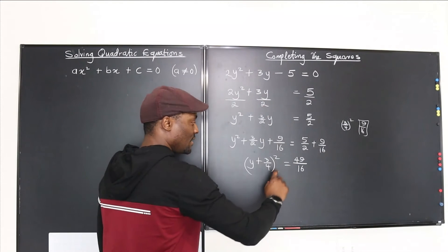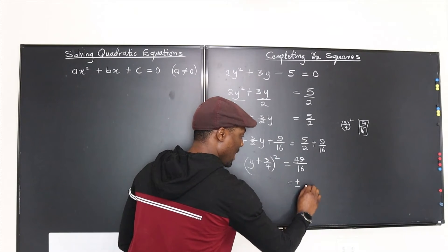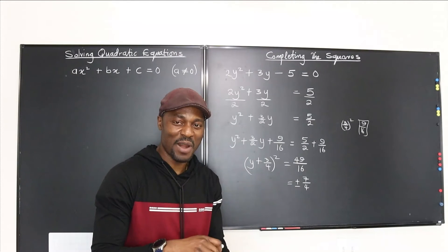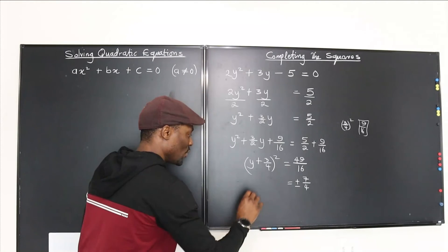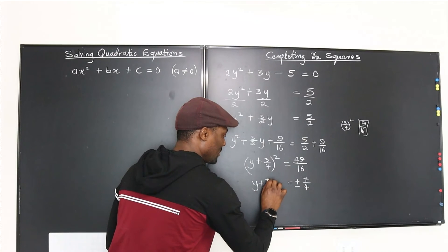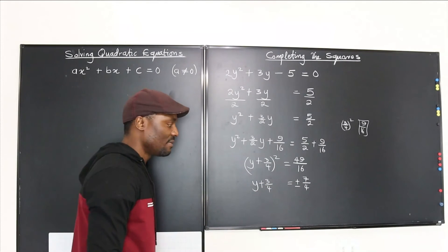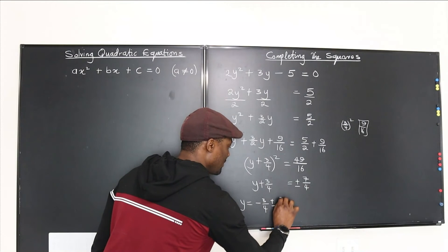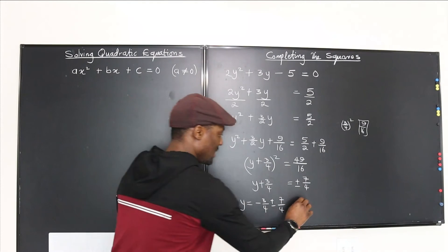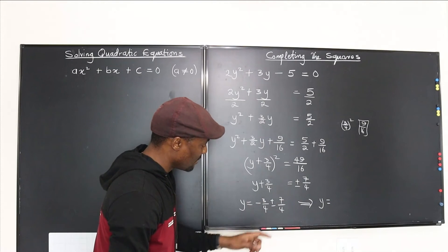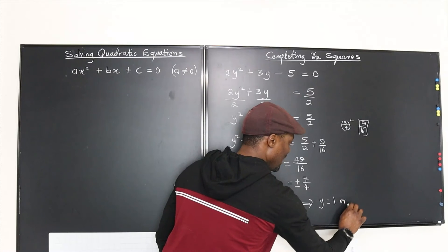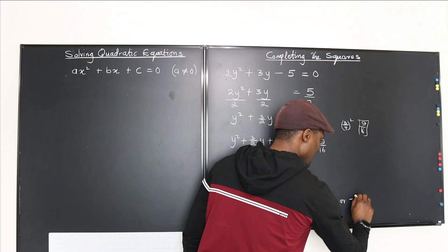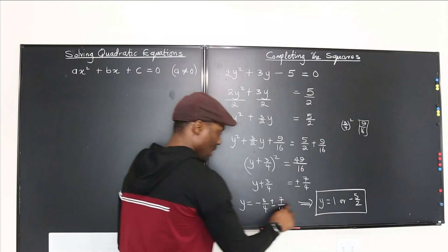Take the square root of both sides. The square root of 49 over 16 is plus or minus 7 over 4. Don't use your calculator to get messy decimals — leave your answers as fractions. So y plus 3 over 4 equals plus or minus 7 over 4. Moving 3 over 4 to the right: y equals negative 3 over 4 plus or minus 7 over 4.